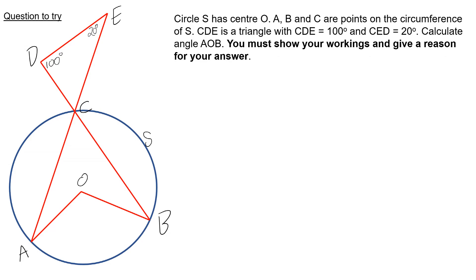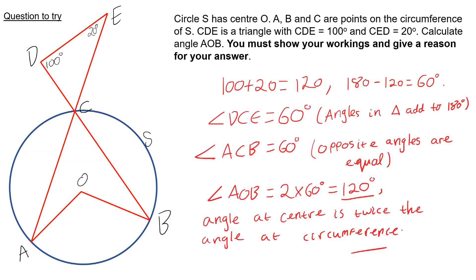Here is the answer. You should end up with angle AOB as 120 degrees. To work out the angle up here, we add up the angles in triangle DC — 120 — take that away from 180, we have 60 degrees. Vertically opposite angles mean this is also 60. So the angle at the circumference is 60, and the angle at the center is twice that, which is 120. You'd have to explain it in words as well to get the full marks.